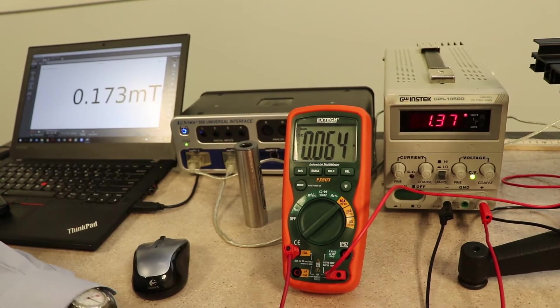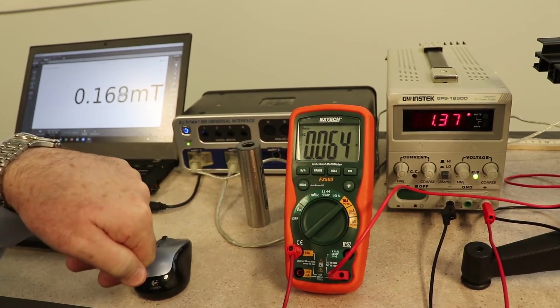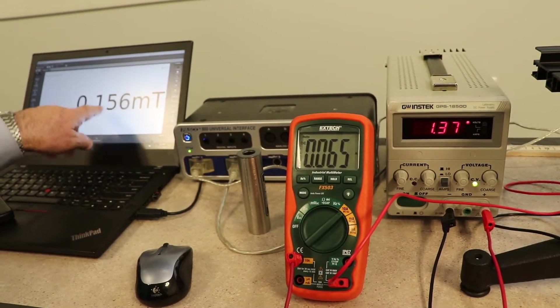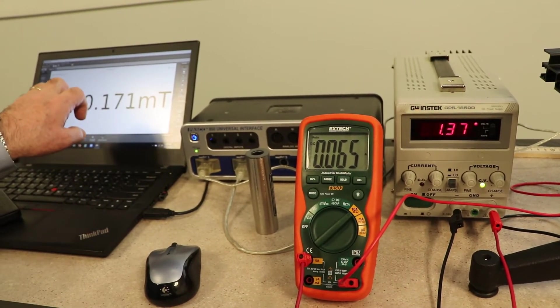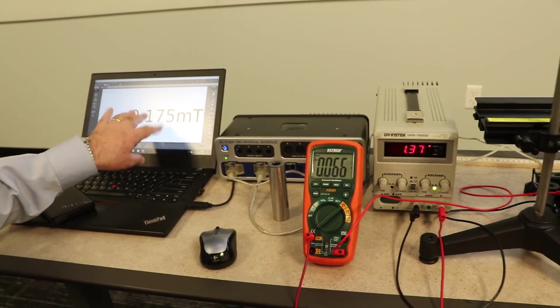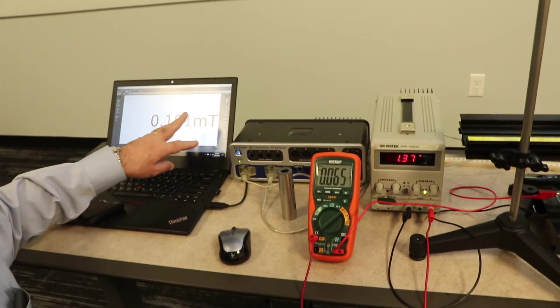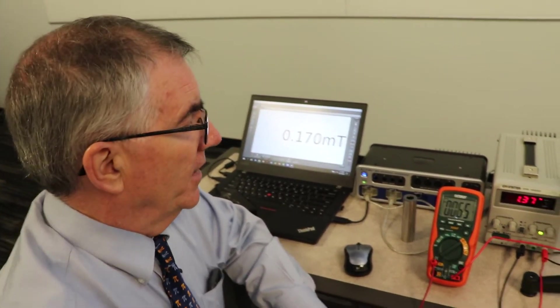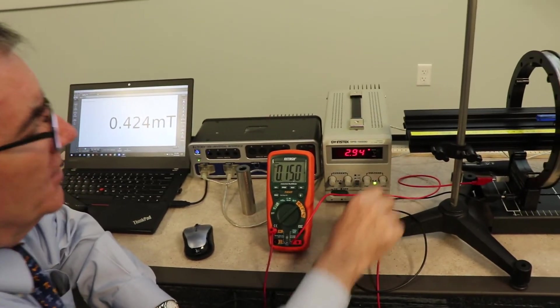At 1.37 volts, we have 0.064 amps, or 64 milliamps, and a B field of - notice it's fluctuating, that's called random error. Look at the fluctuation and pick a number. I saw it go into the upper 60s and into the 180s, so I'm picking 0.175 millitesla.